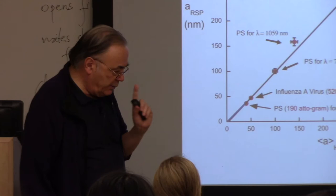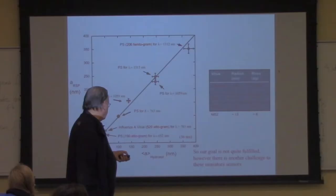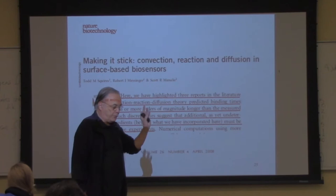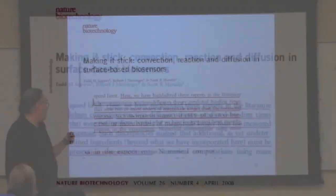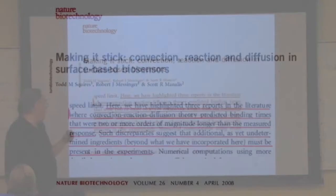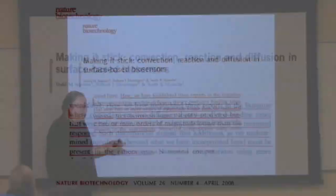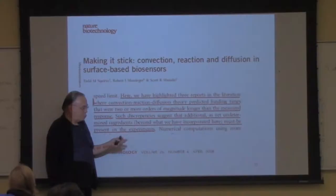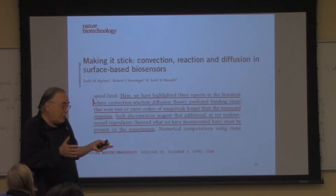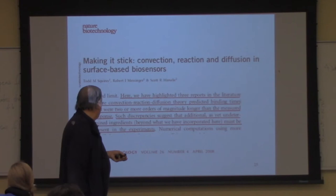There was a challenge from MIT and University of California, Santa Barbara. They were looking at experiments in this area and found three reports in the literature predicting, based on theory, that the binding could not have been as fast as what was being measured — meaning there were too many steps coming too fast based on the concentration and solution. They were smart enough to say such discrepancies suggest that an additional, as yet undetermined ingredient, must be present in the experiments.